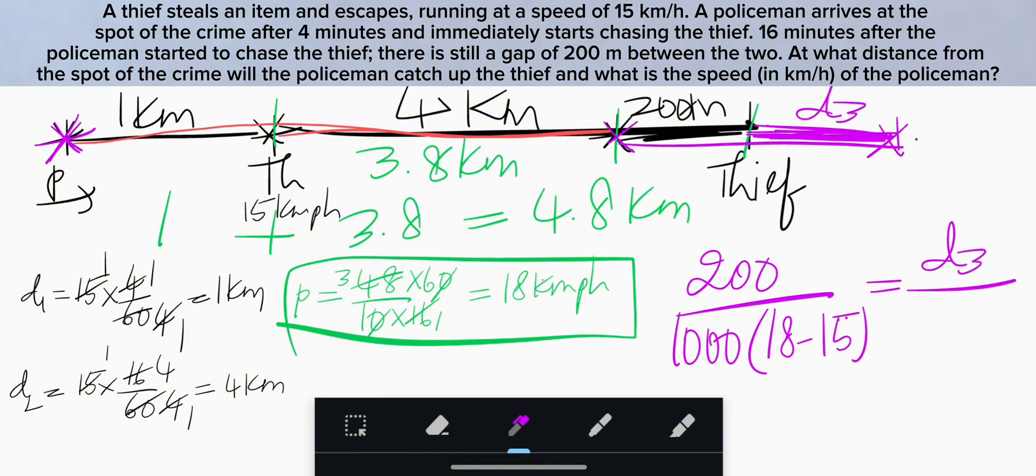D3 by speed of the thief that is 15. Two zeros cancelled. 18 minus 15 gives 3. So D3 is 1 km. So this portion is 1 km.